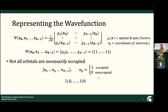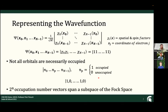Hopefully, for quantum computing people, this starts ringing some bells. These occupation number vectors span a subspace of the Fock space, and there are 2-to-the-n of these — that's the dimensionality of the vectors within this vector space.